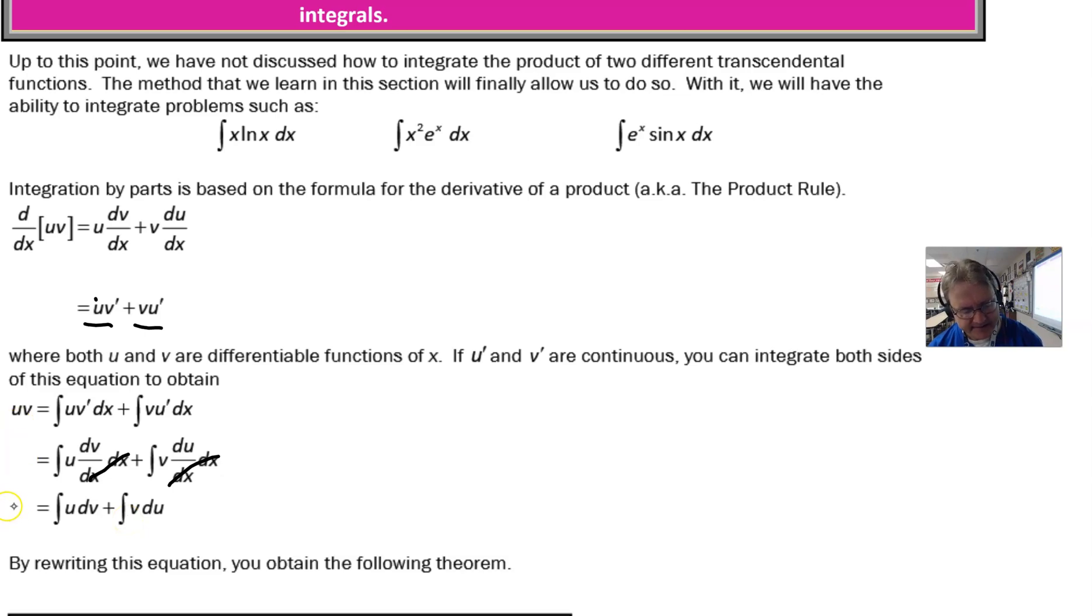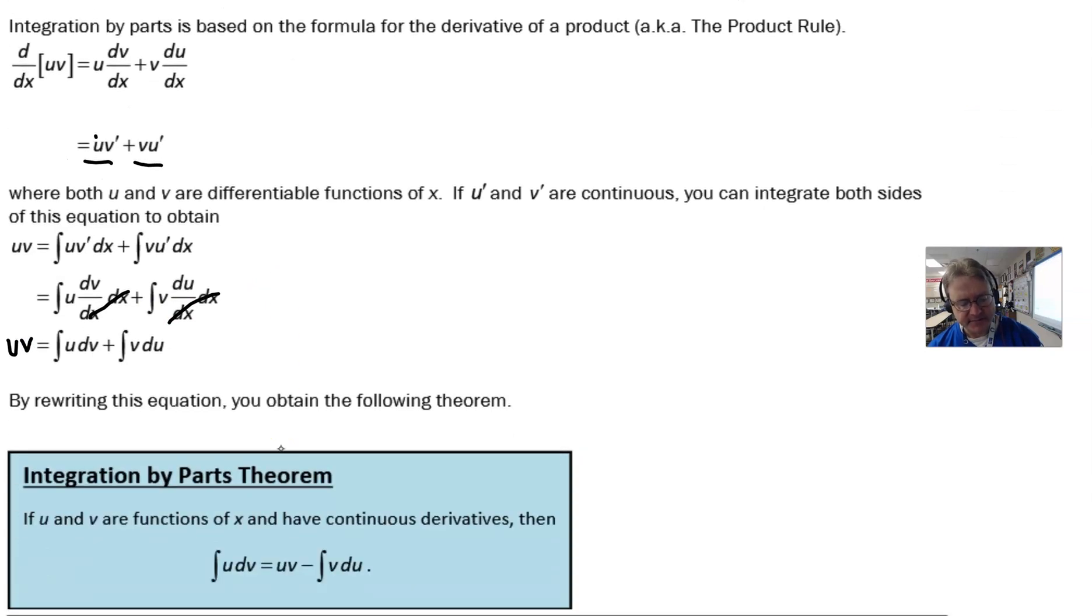At that point, let's leave our prime notation, go back to Leibniz notation. Change v prime to dv over dx, change u prime to du over dx. And we have a situation where now our dx's can cancel. And we have integral of u with respect to v plus the integral of v with respect to u. Now, remember, all of that is still equal to u times v. So if we rewrite this equation just a little bit, basically solve for this piece by subtracting the integration of v with respect to u over, we end up with our integration by parts formula.